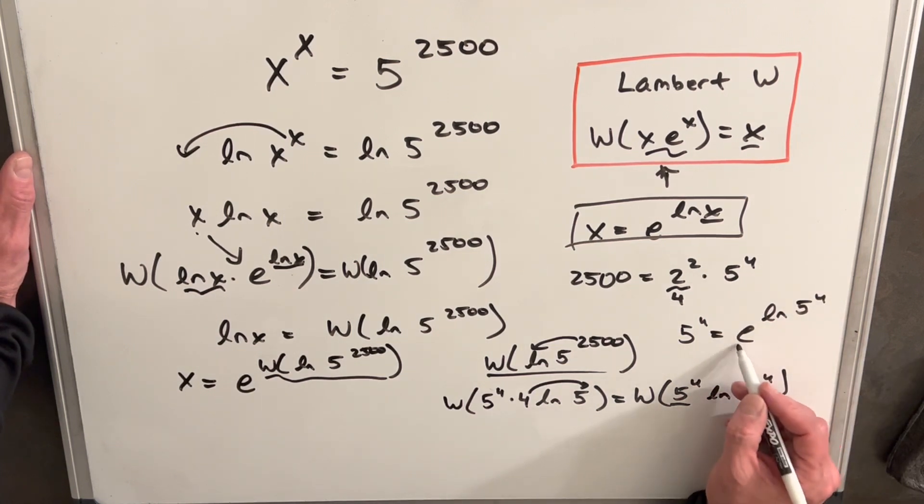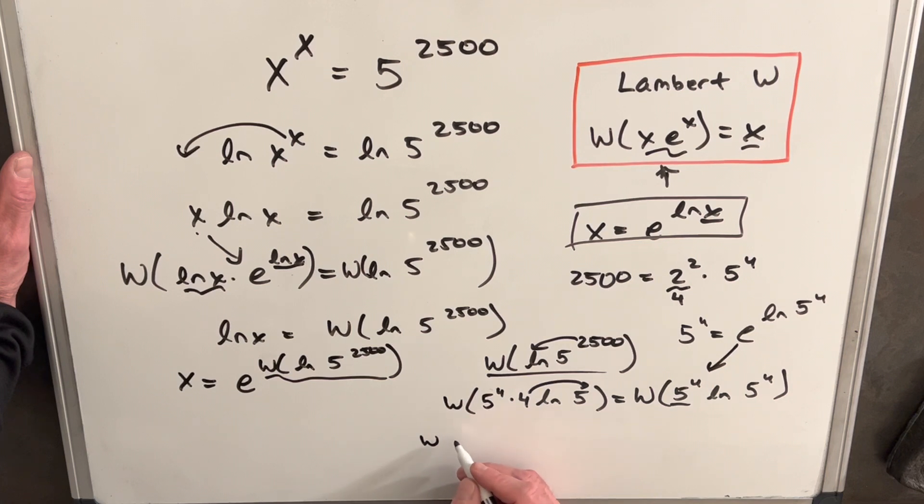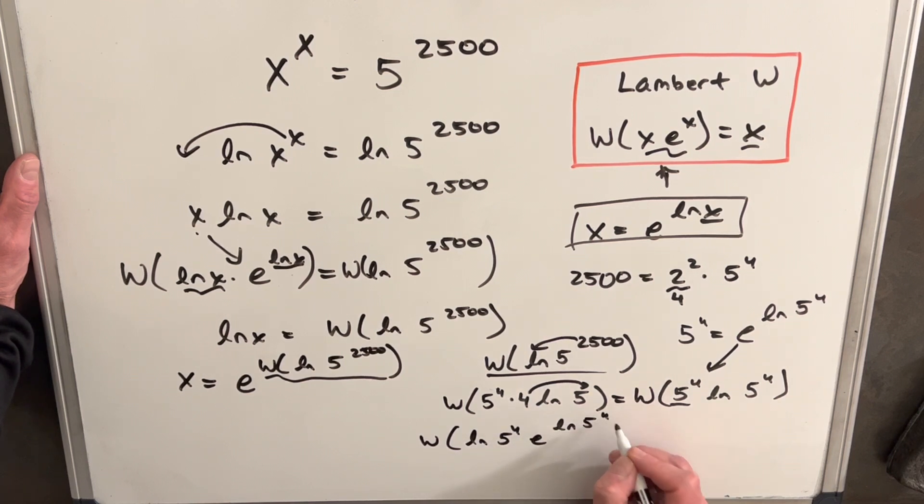So doing that and substituting that back or however you want to say it, we're going to have Lambert W of ln 5 to the 4th, e to the ln 5 to the 4th.